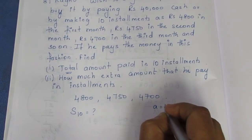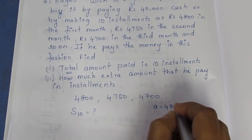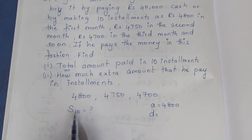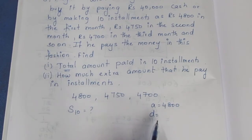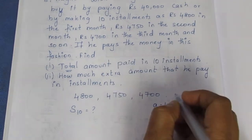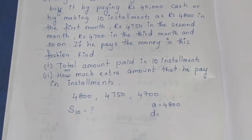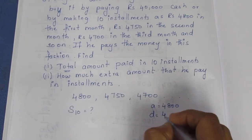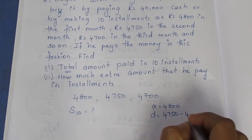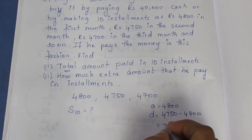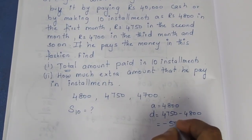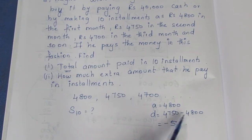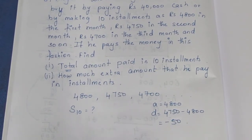We identify the arithmetic progression. The first term a equals 4800. The common difference d equals 4750 minus 4800, which is minus 50 rupees. We also know the number of terms n equals 10.